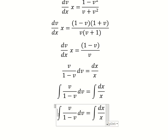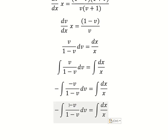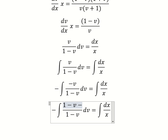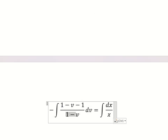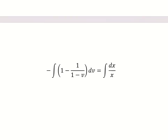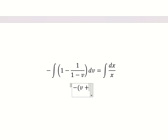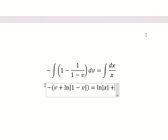Next, we put the negative sign here and here. We need to add 1, then minus 1. This one divided by this one. The integral of 1 over v gives us ln of the absolute value of 1 minus v. The next one is ln of the absolute value of x, plus c.